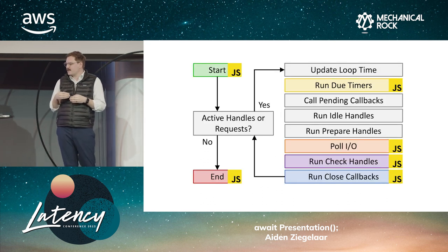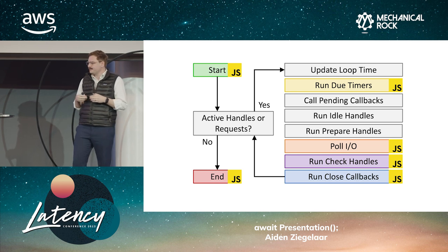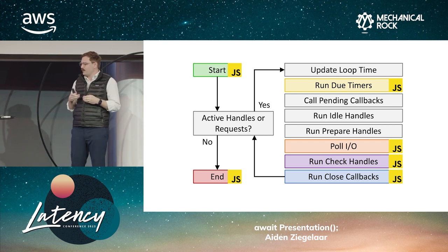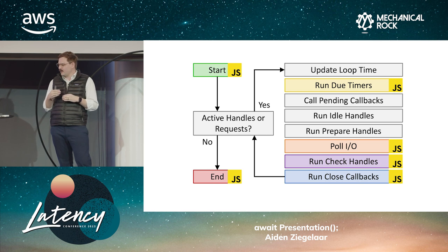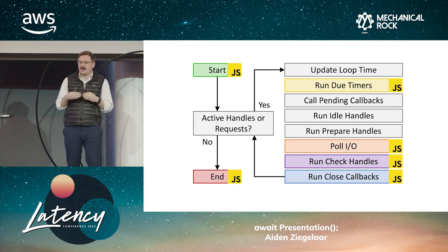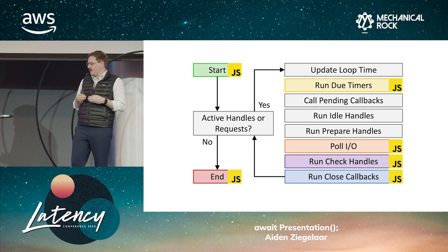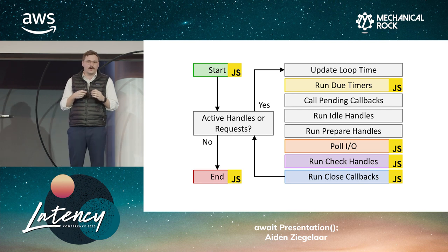At each of these points in the event loop, it's possible for us to schedule some JavaScript to run through the Node.js runtime in response to certain events. It's important to note that these stages are all being looped through in a single thread. This means the JavaScript we run is all being processed in a single thread — except for workers, of course. The event loop model is therefore used as we assume that most of our workload is going to be I/O bound, providing ample time for execution in the main thread. Once we start getting to compute-bound tasks, we really run the risk of overloading that main thread.